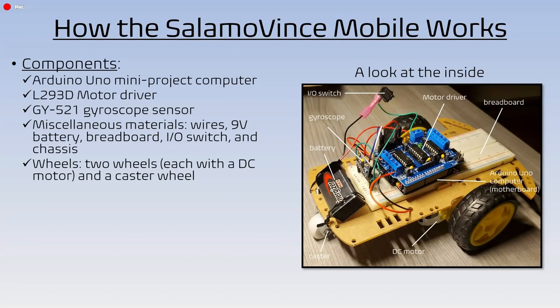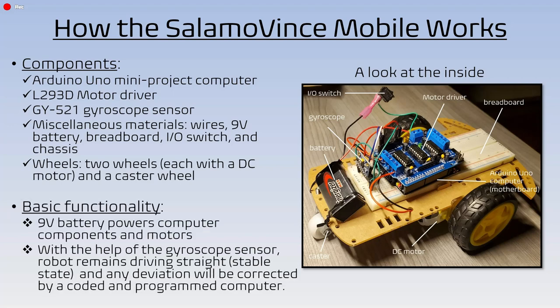So how does the Salamo Vince Mobile work? The components are: an Arduino Uno computer used for mini projects and R&D, a motor driver seen on top of the Arduino Uno, a gyroscope sensor at the front, and miscellaneous materials such as wires, a 9-volt battery, a breadboard, an on/off switch, and a chassis. There are three wheels — two with DC motors connected to them, and the front wheel is a caster wheel.